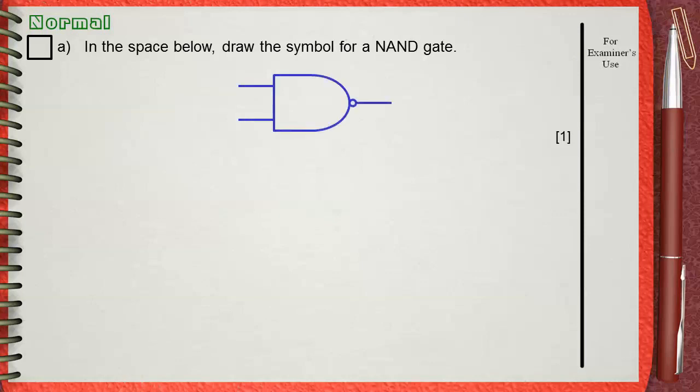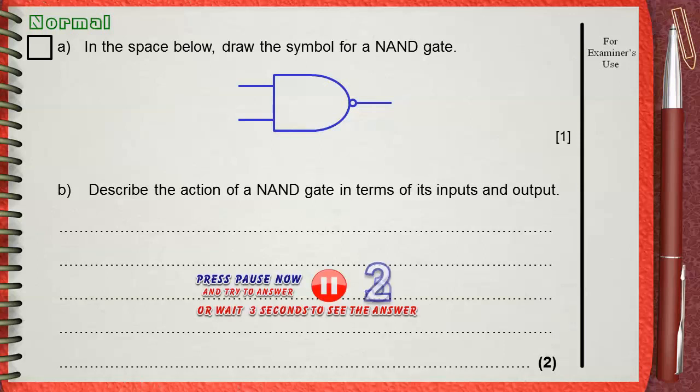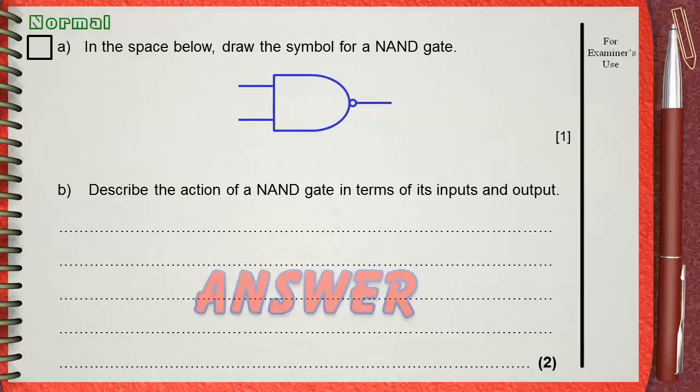Question B, describe the action of a NAND gate in terms of its inputs and output. There are two ways to answer this question.